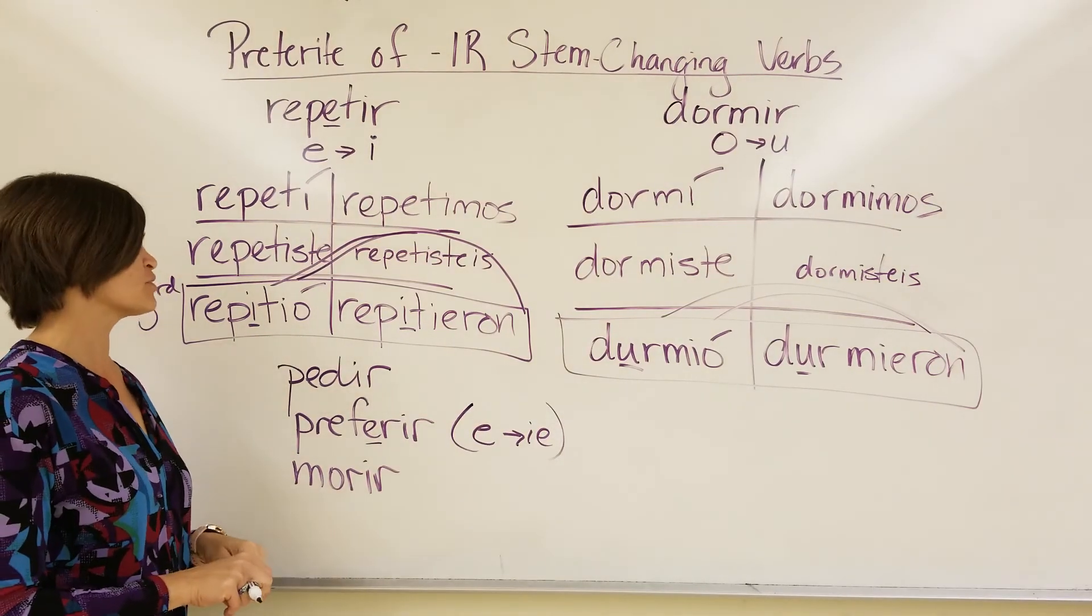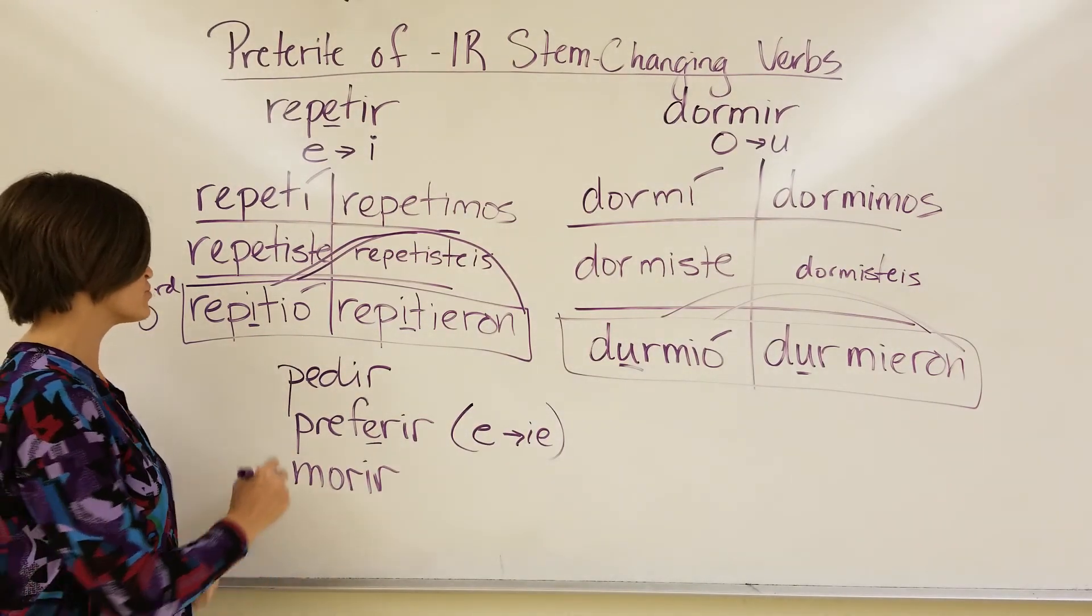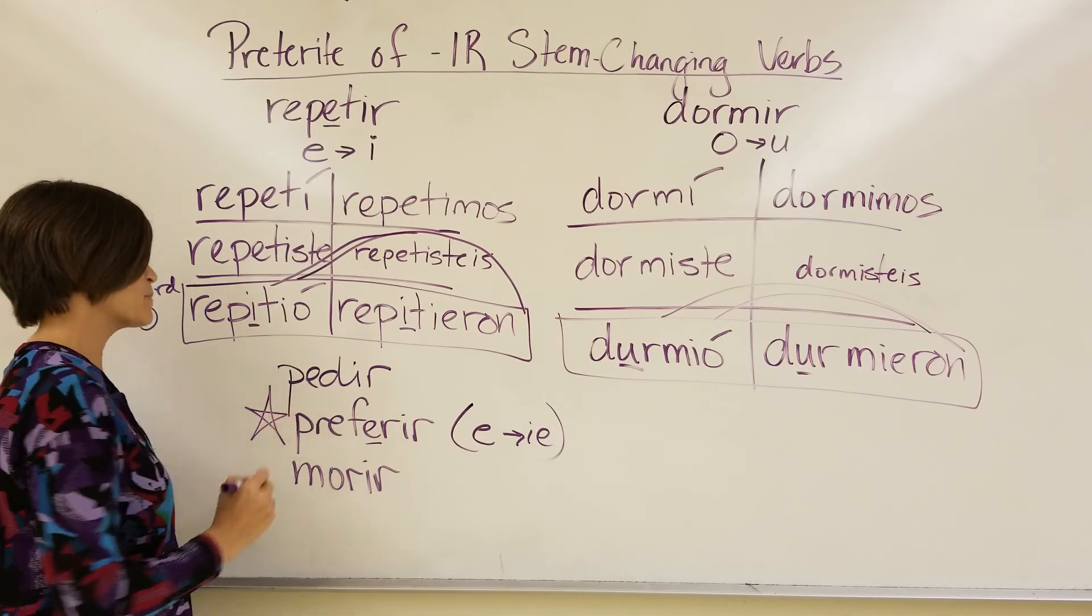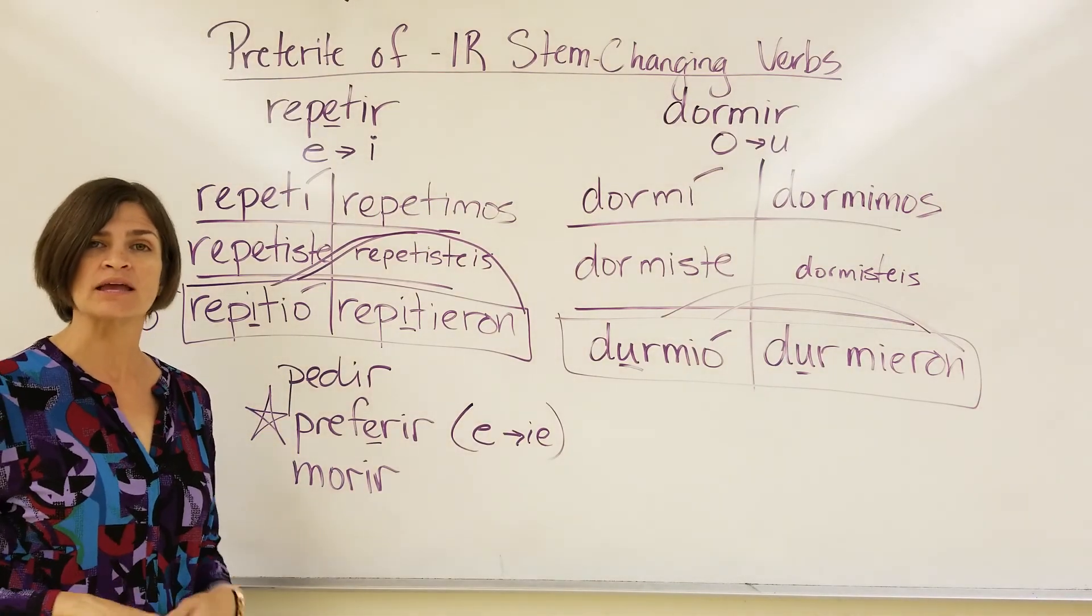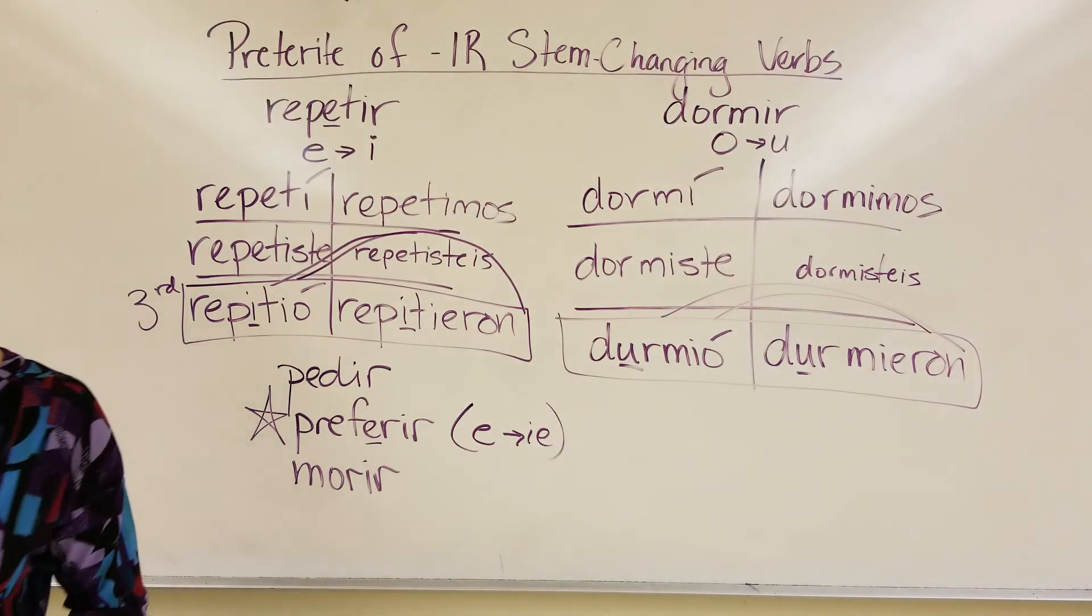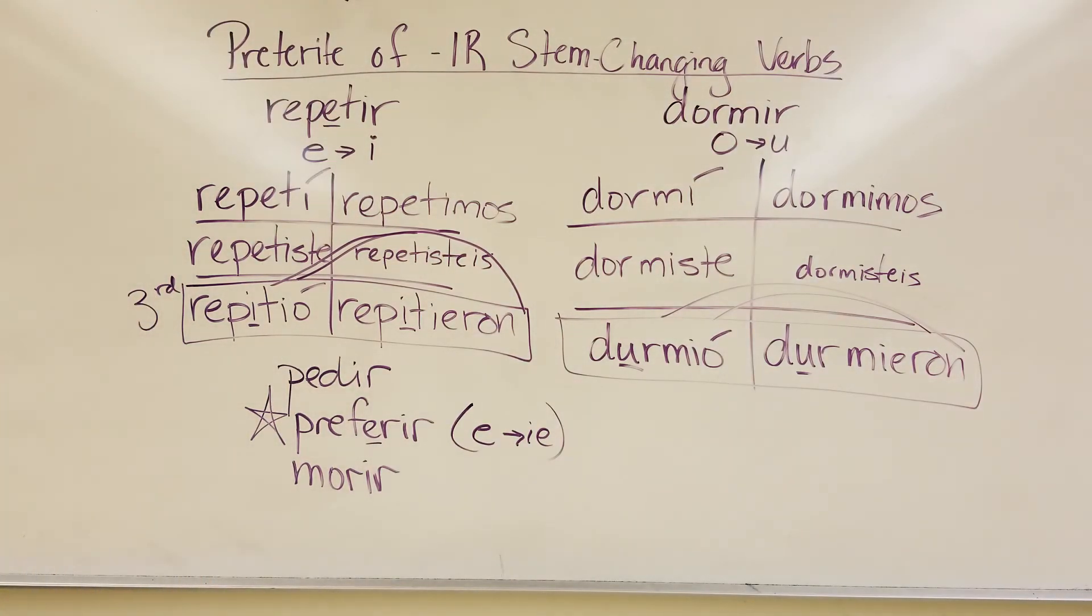So, at the bottom of the notes here, what I want you to do is conjugate the verb preferir in the preterite, and I'll come check it when I check the notes. So, let's see.